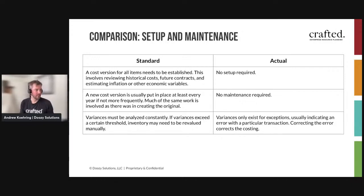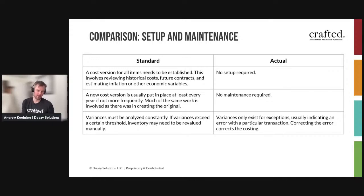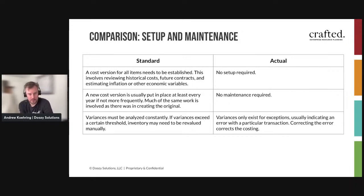Standard costing variances need to be reviewed constantly — there may be large ones that need to be addressed and require inventory revaluation; otherwise you're operating for three or four months with very inaccurate costing. With actual costing, variances really just signal that a transaction needs to be corrected, and then everything recalculates and flows through automatically.